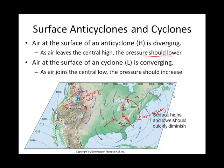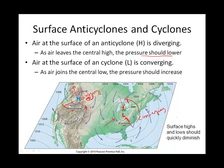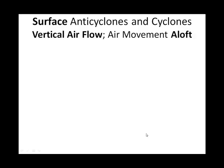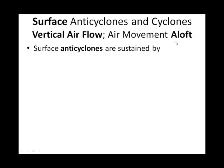The fact that our central highs can remain high even though air is diverging, and our central lows can remain low even though air is converging, means something else must be going on. And that something else has to do with what we call aloft — upper elevations within the troposphere.